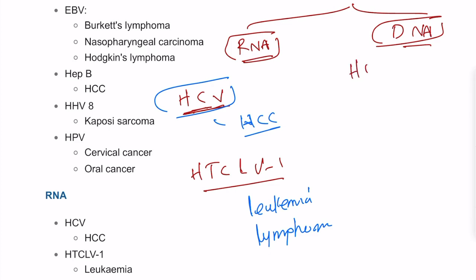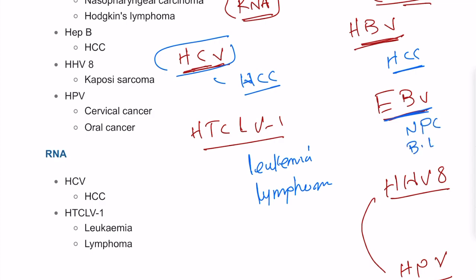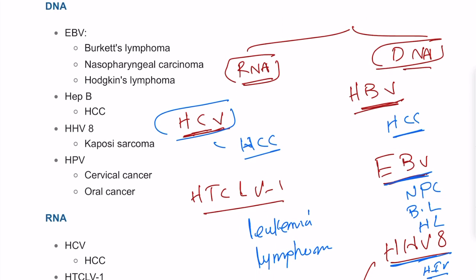DNA oncogenic viruses include Hepatitis B virus (causing hepatocellular carcinoma), Epstein-Barr virus (causing nasopharyngeal carcinoma, Burkitt's lymphoma, and Hodgkin's lymphoma), Human Herpesvirus 8 (causing Kaposi's sarcoma in HIV patients), and Human Papillomavirus (causing cervical cancer in female patients). These are the key oncogenic viruses associated with nasopharyngeal carcinoma and related malignancies.